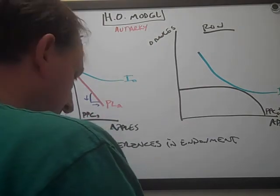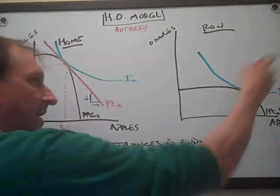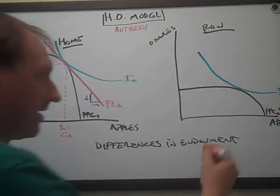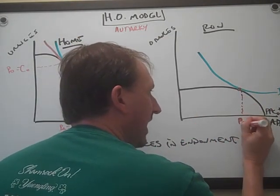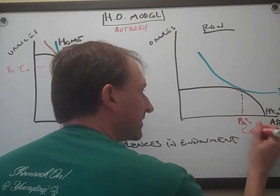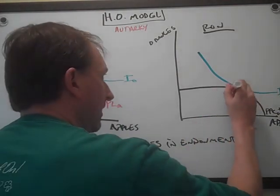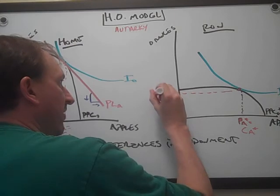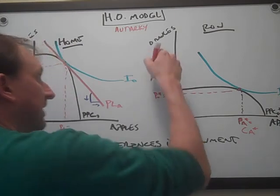Then we wind up with this optimal combination, which is this point right here. That's the best that they're going to do. They can't reach an indifference curve that's further out than that. So if that's true, then in autarky, PA star means apples - PA star is going to equal CA star. They're going to make that many apples and they're going to eat them all. And then here you're going to have PO star equals CO star. O stands for oranges, so they're going to make that many oranges and they're going to consume that many oranges.